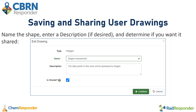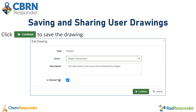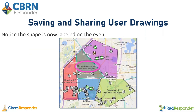Once you have found the drawing you want to save, click the green save icon. This will open a tab for you to enter the name and a description if desired. You can determine whether you'd like to share it across your event — if you choose to share, it will be available to view by other responders who have access. Once those fields are filled out, click the continue button to save, and the shape will now be labeled on the event map.